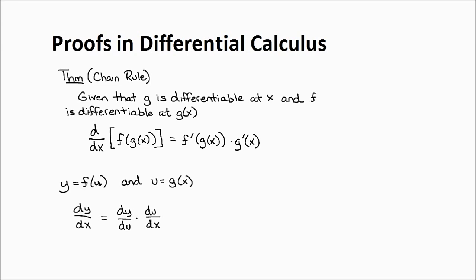The chain rule states that we're given two differentiable functions. One is g, that's differentiable at x, the other is f, that's differentiable at g of x. And we're going to take the derivative of the composition — the derivative of f of g of x — and we want to show that that's equal to f prime of g of x times g prime of x.